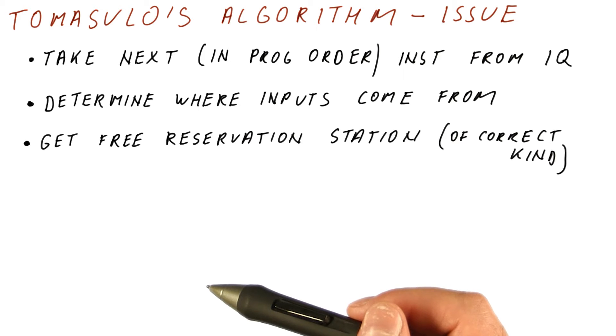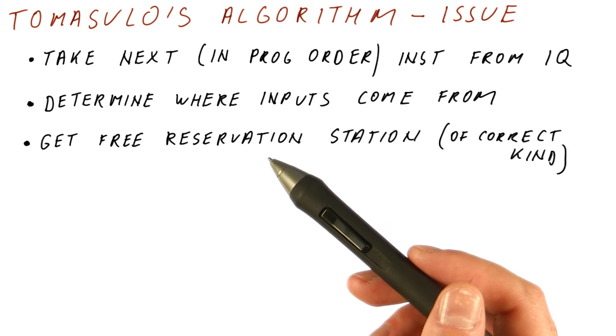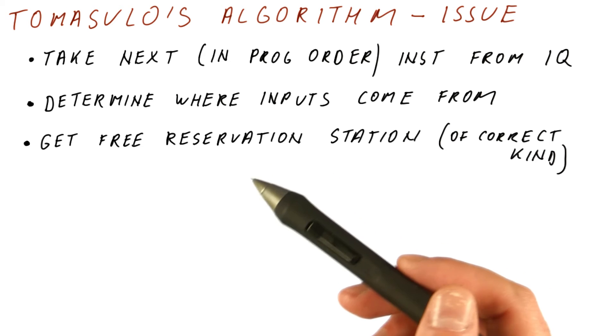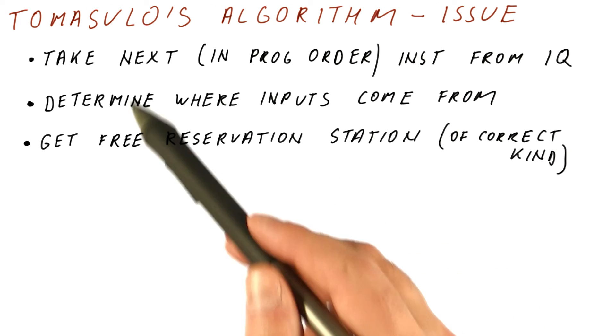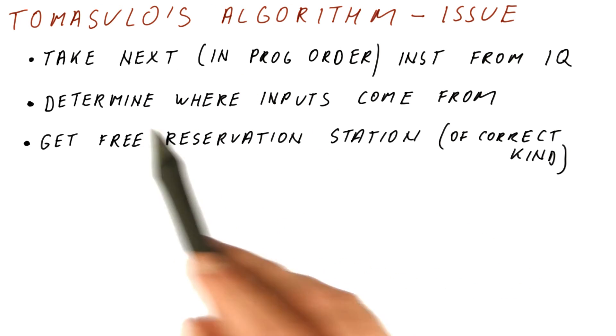If all of the reservation stations are busy at this point, meaning they're already used by some other instructions and those instructions haven't left yet, then we simply don't issue anything this cycle. And in Tomasulo's algorithm, they were issuing one instruction at a time. So they would just issue one instruction per cycle.